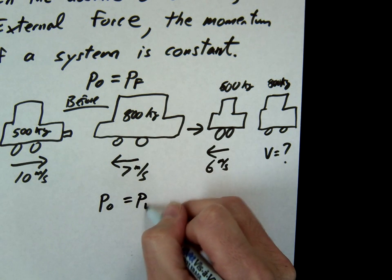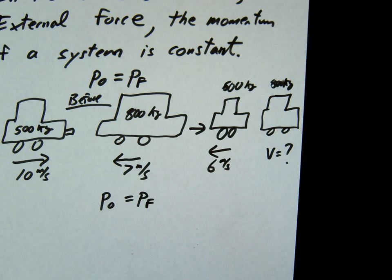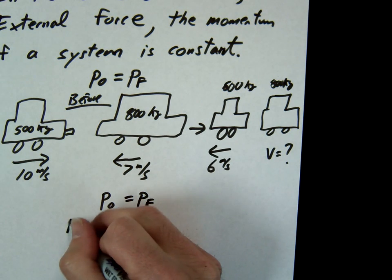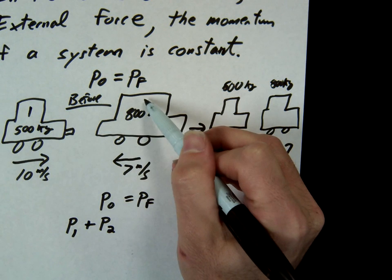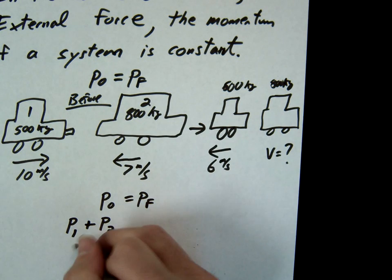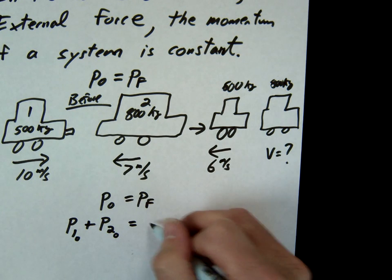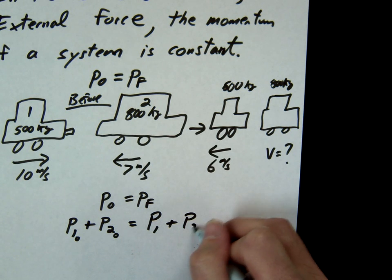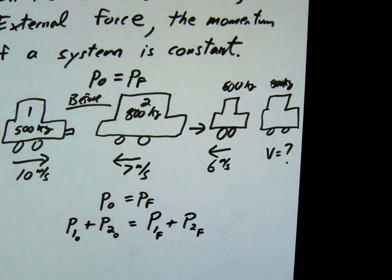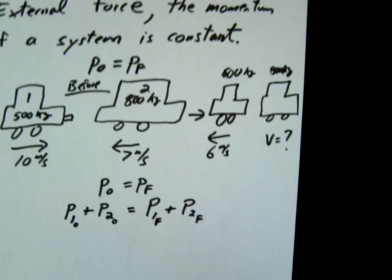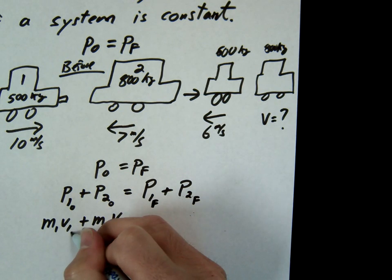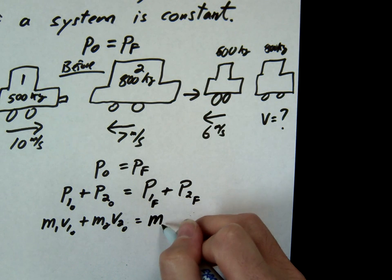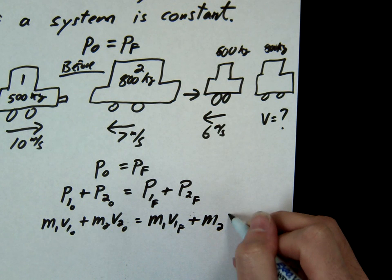So let's go ahead and do it. So we'll go P initial equals P final. Initial momentum. The initial momentum is going to be the combination of car 1 plus car 2. So we'll call this one car 1. We'll call this one car 2. That's going to have to equal the momentum of car 1 plus car 2 after the collision. So this would be M1 V1 plus M2 V2. These are all initials. It has to equal M1 V1 final plus M2 V2 final.